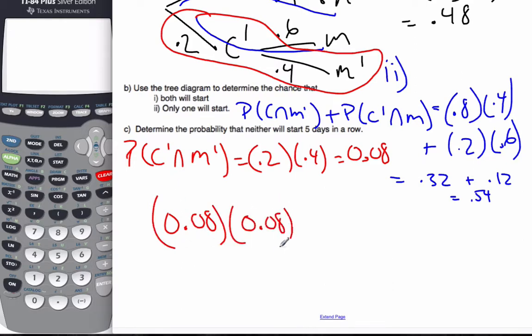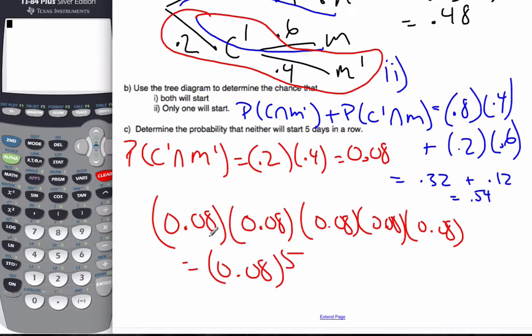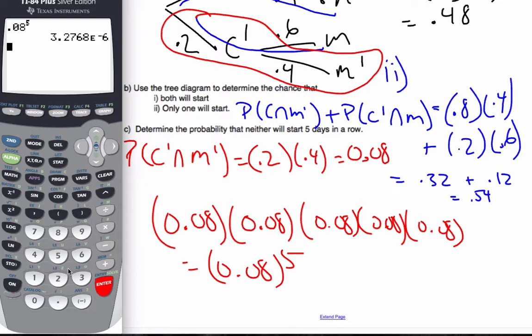Times the next day is that, times the next day, times the next day, times the next day, which is 0.08 to the power of five, which is a very small value there. 0.08 to the power of five, which is really, really small. But that's the probability of it five days in a row. It's not gonna happen.